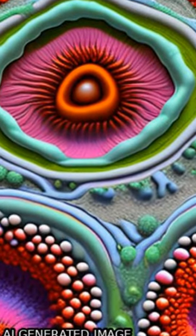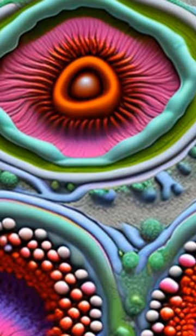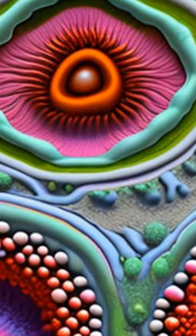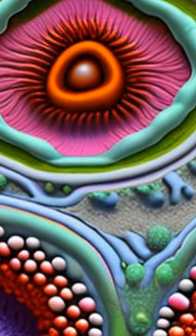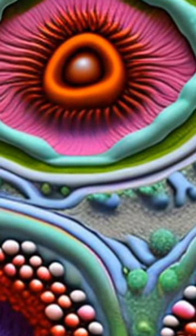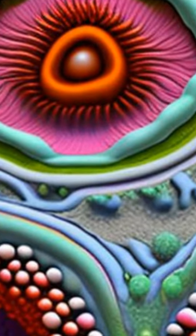Biofilms are three-dimensional structures formed by bacteria when they attach to surfaces or other materials. They are often found in chronic infections and can be difficult to treat due to their ability to resist antibiotics.